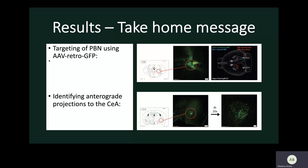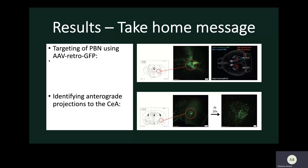When the virus moves towards the PBN, that is a retrograde movement — in other words, we will see cell bodies in the areas that project to the PBN. When it moves away from it, we'll see cell bodies in the PBN and axon tracks in the area that has been projected to. The areas projected to were the CEA, and the areas we see projections from were the BNST, the ZI, and the trigeminal ganglion, which I'll talk about a little later.